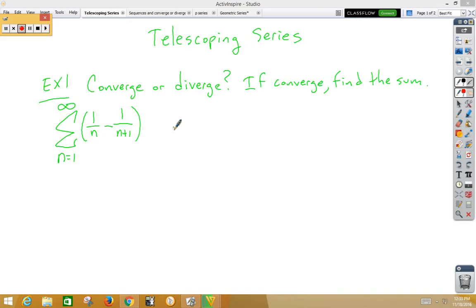In this video, we're going to go over telescoping series. A telescoping series is a special type of series where some terms remain and some terms cancel out. Let's take a look at this example.